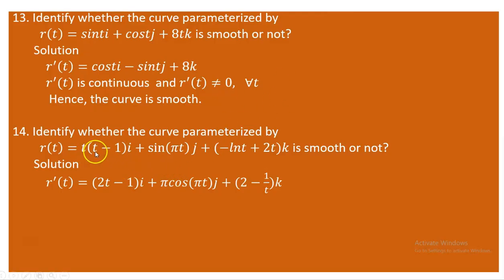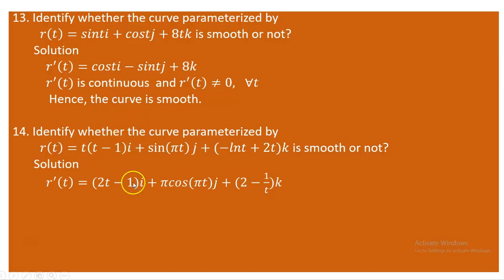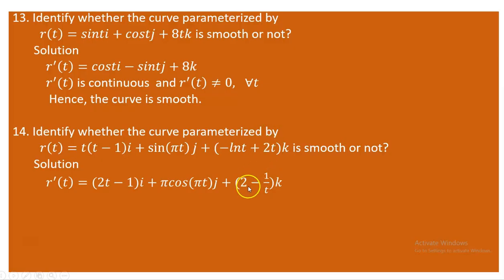Taking the derivative: for the component t² − t, you multiply out to get 2t − 1. For sin(πt), the derivative is π·cos(πt). For the ln(t) term, the derivative is −1/t, and for 2t it is 2. So this is the derivative vector function.